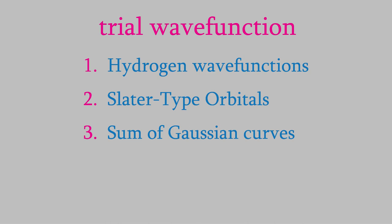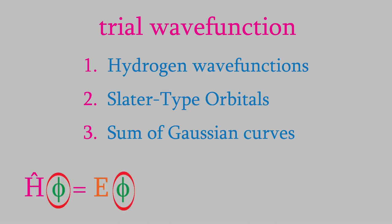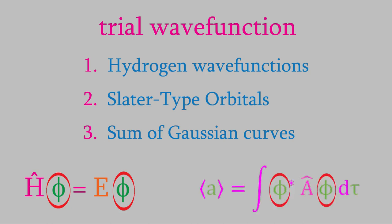Once we've chosen a good trial wave function, we can use it in the Schrödinger equation to find the approximate energy, or find the expectation value for another property we're interested in for the system. But once we've done that, what's next? We know that the trial wave function isn't the same as the real one, so the energy or other property that we've calculated won't quite be correct. Is there any way we can improve the trial wave function so that our calculations yield better results? The answer is yes, and that's what I want to tell you about today.